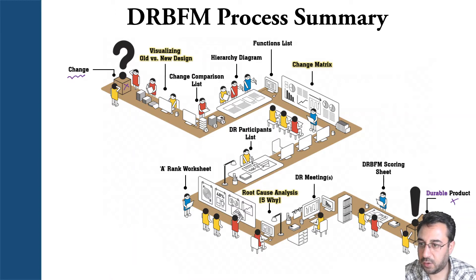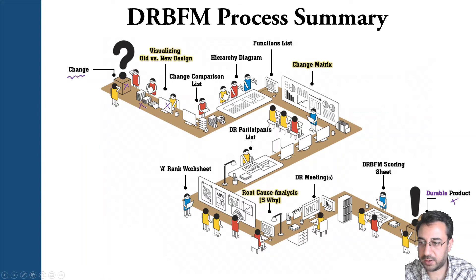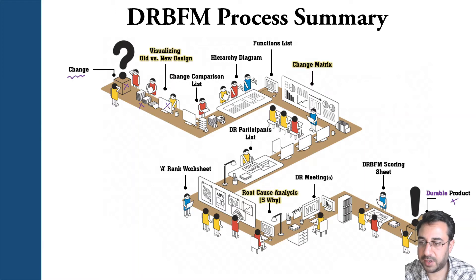You already decided what is changing in your product, and next you will go with visualizing the old versus new design. You use all the tools and all the expertise that you have in your organization to visualize what happened between the old or current design versus the new design you are trying to achieve. You put all your designs in 3D modeling and break down all the exploded views, all parts, sub-parts, and assemblies, and identify where the change happened between the old and the new design.